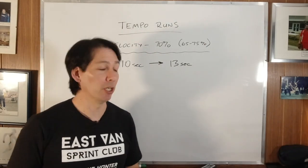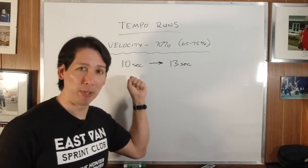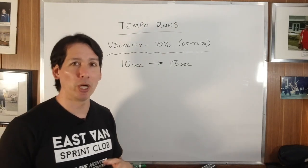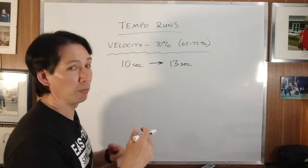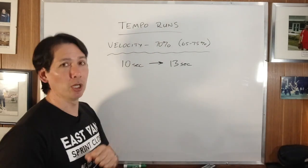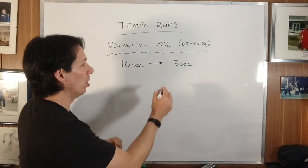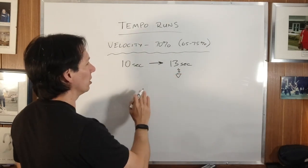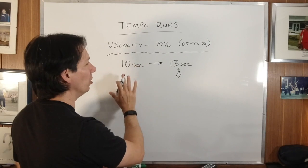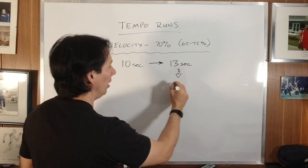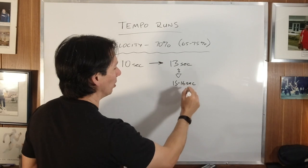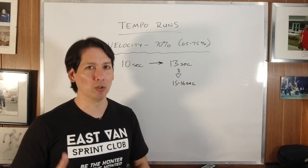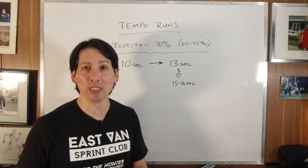Now let's factor in some things. If they're running 10 seconds in a competitive 100 meters on a track with spikes, they're not going to be running in spikes during their tempo run. They're going to be in regular training shoes, and they might be on grass, maybe turf. So we have to take that and ask: what is 13 seconds going to be for somebody who's a high-level sprinter? It might be about 15 to 16 seconds on a softer surface, nice and relaxed, nobody firing a gun, nobody racing against you.